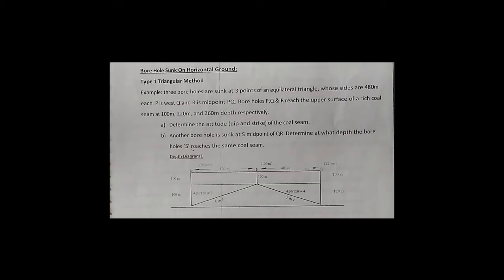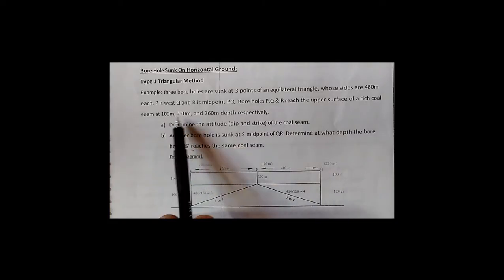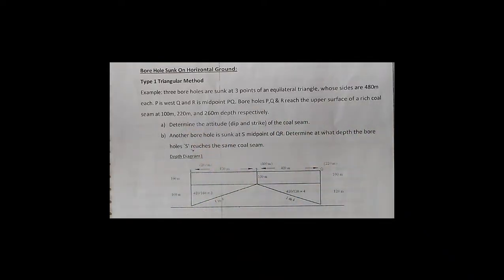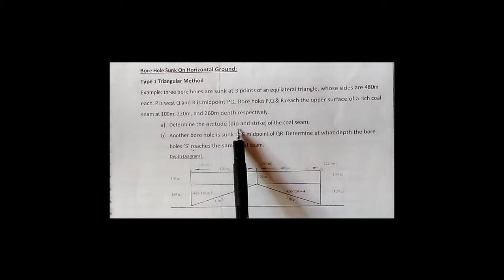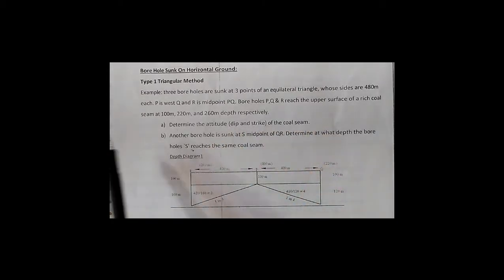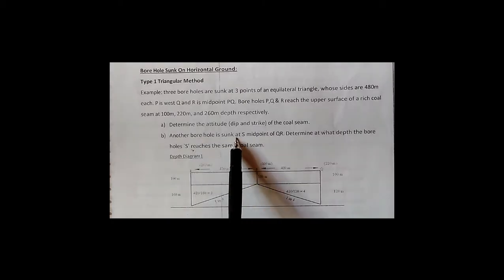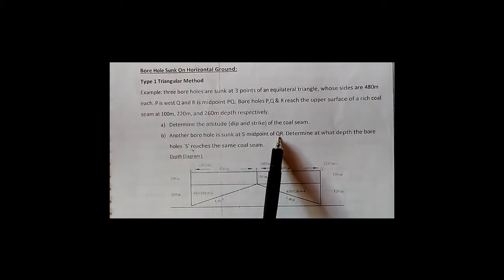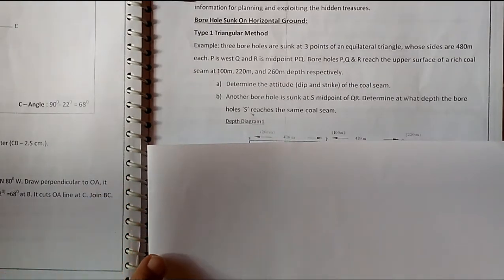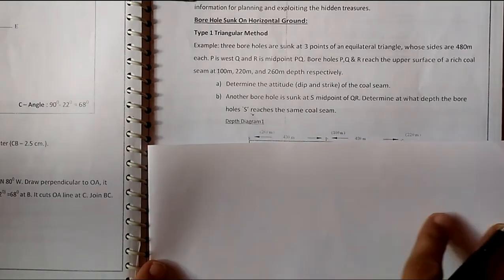Boreholes P, Q, and R reach the upper surface of a rich coal seam at 100 meters, 220 meters, and 260 meters depth respectively. We have to find out the dip and strike of the coal seam. Another borehole is sunk at S, the midpoint of QR — determine at what depth borehole S reaches the coal seam.